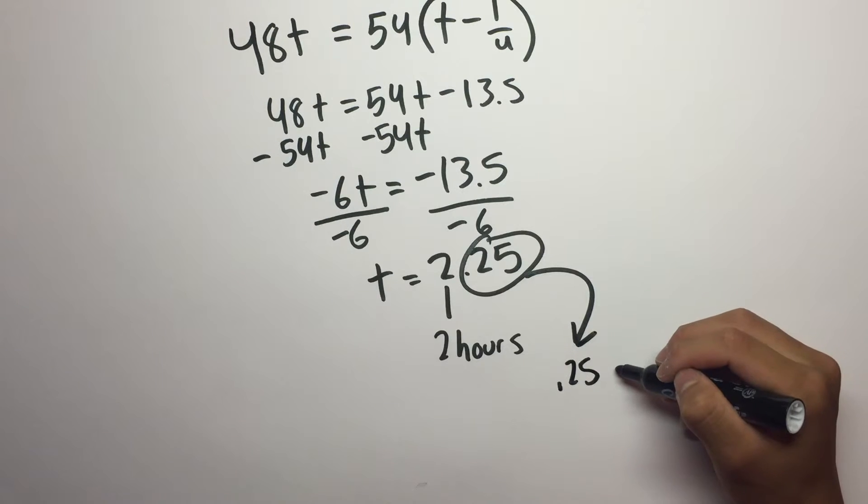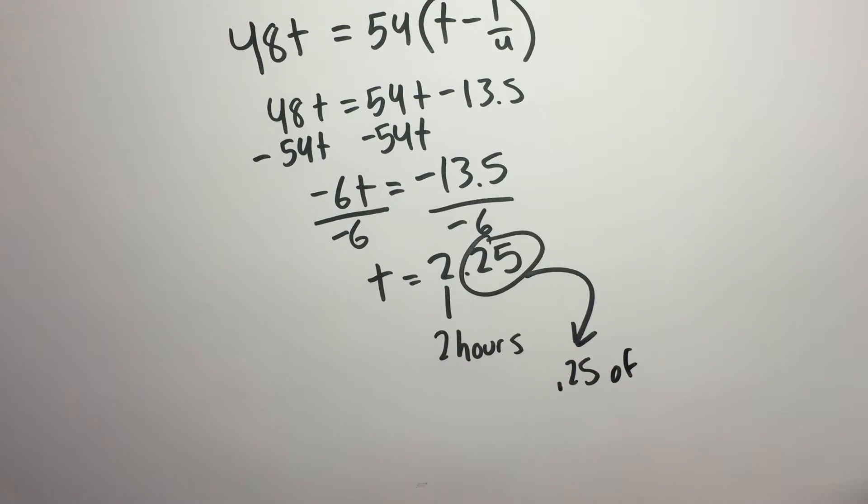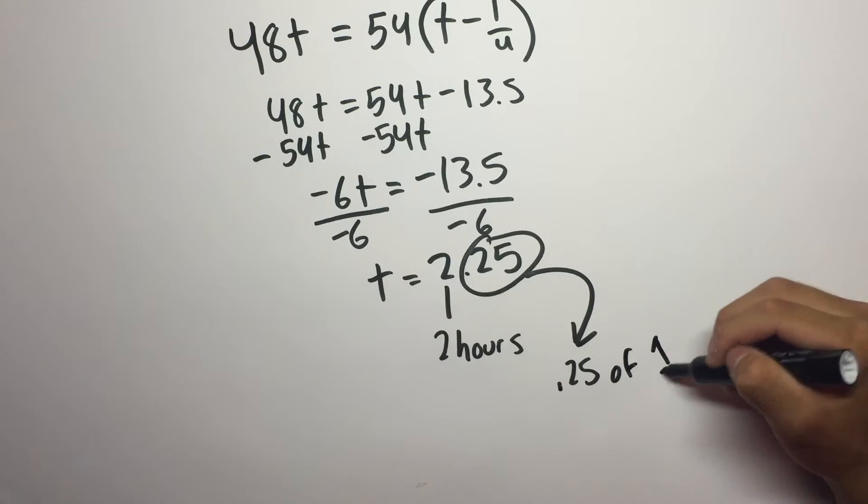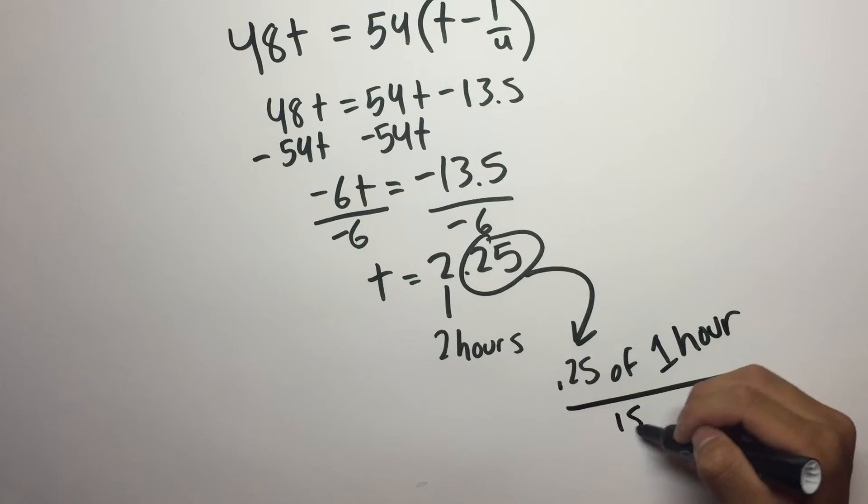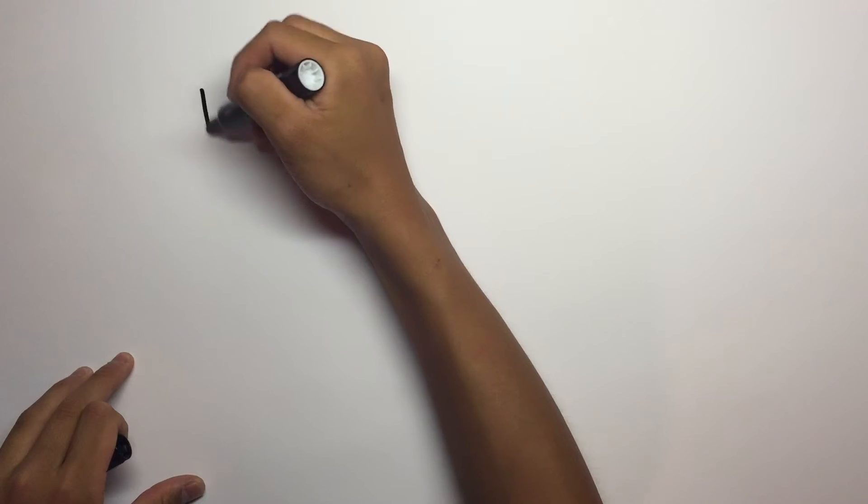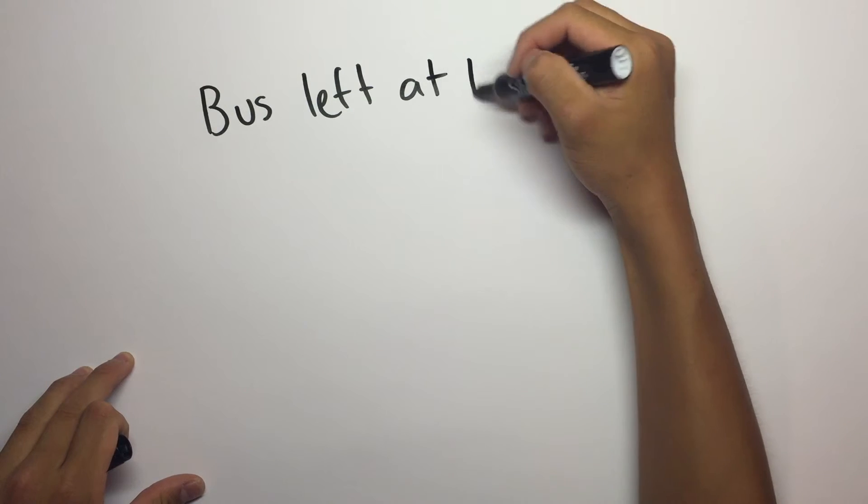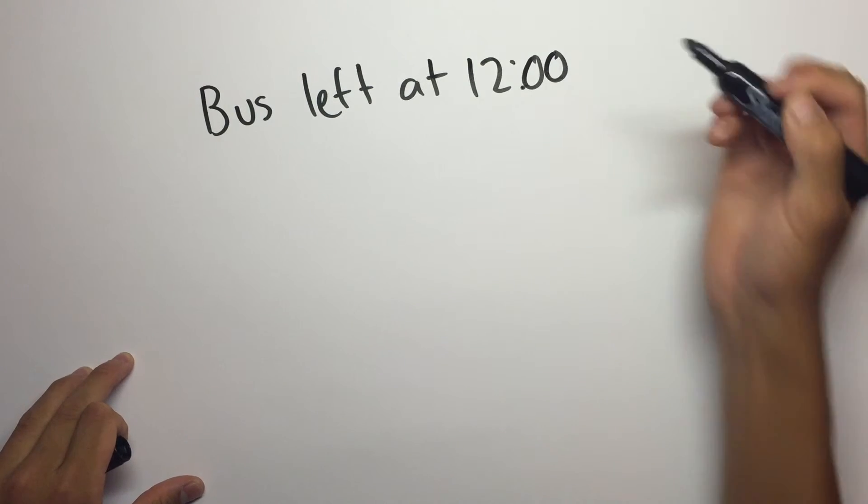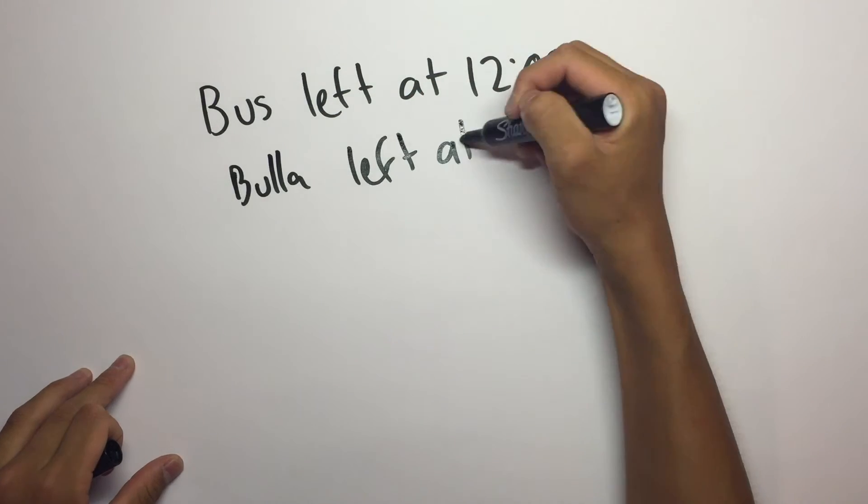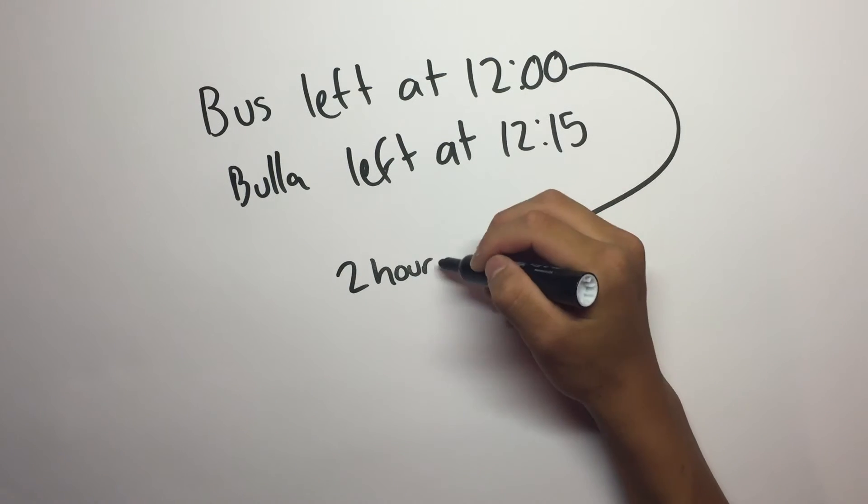Since it's 2.25, the 0.25 is a fourth of an hour and that's 15 minutes. So two hours and 15 minutes. We know the time that Bula caught up with the bus is at 2:15 because you add two hours and 15 minutes to the 12 o'clock when the bus left.